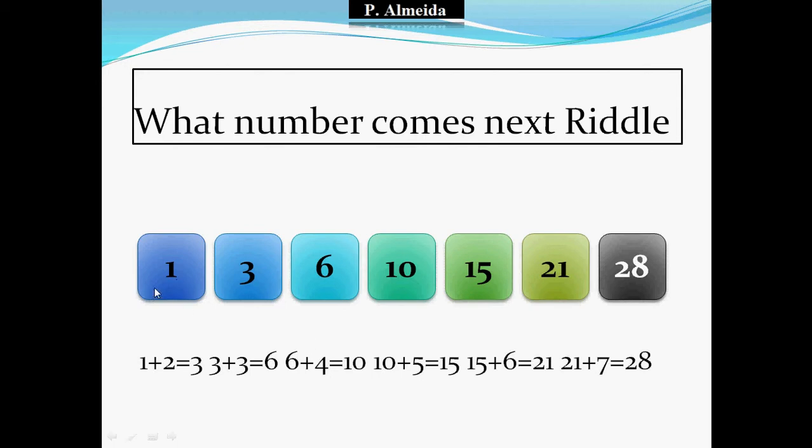So for example, 1, the solution here for 3 is 1 plus 2, the second square. So it gives you 3. Then 6 will be 3 plus 3, the third number, so it gives you 6.